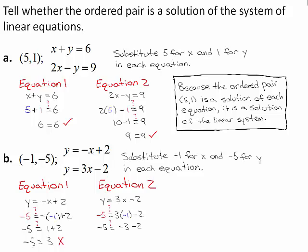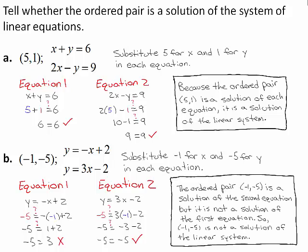3 times negative 1 equals negative 3, and negative 3 minus 2 equals negative 5. Because negative 5 equals negative 5 is always true, the ordered pair negative 1, negative 5 is a solution of equation 2. However, since it is not a solution of the first equation, negative 1, negative 5 is not a solution of the linear system.